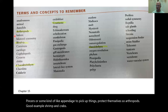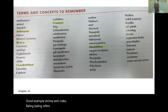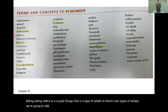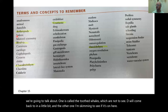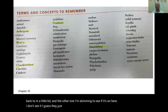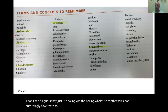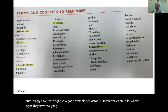Baleen refers to a couple of things. One is a type of whale. There are two types of whales: toothed whales, which are odontoceti, and baleen whales. Toothed whales, not surprisingly, have teeth — a good example is killer whales. They have really big teeth used to eat things.